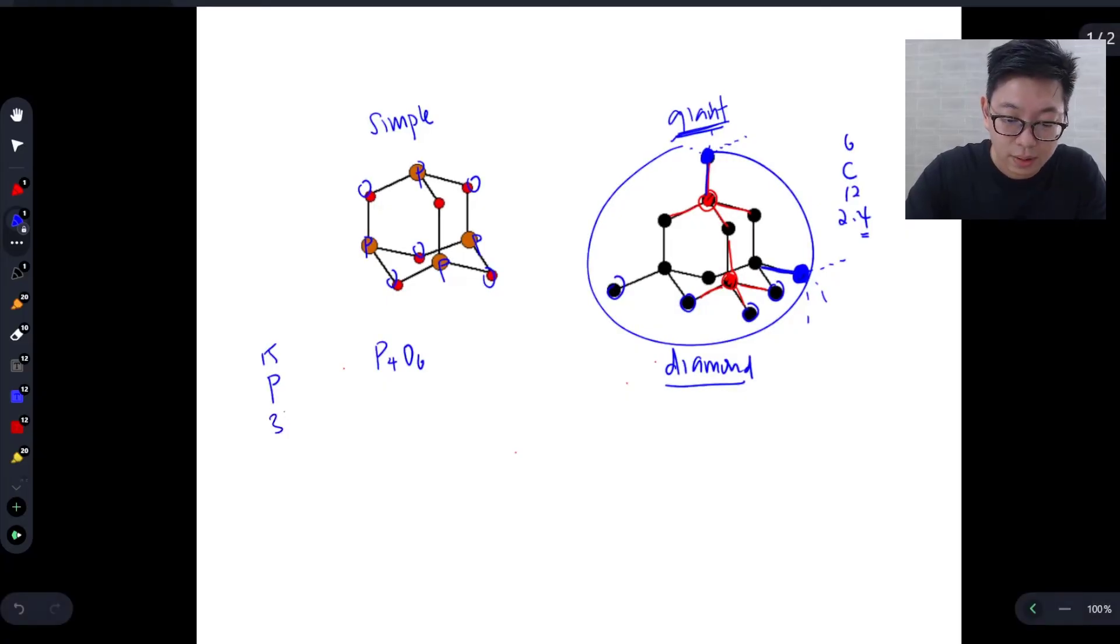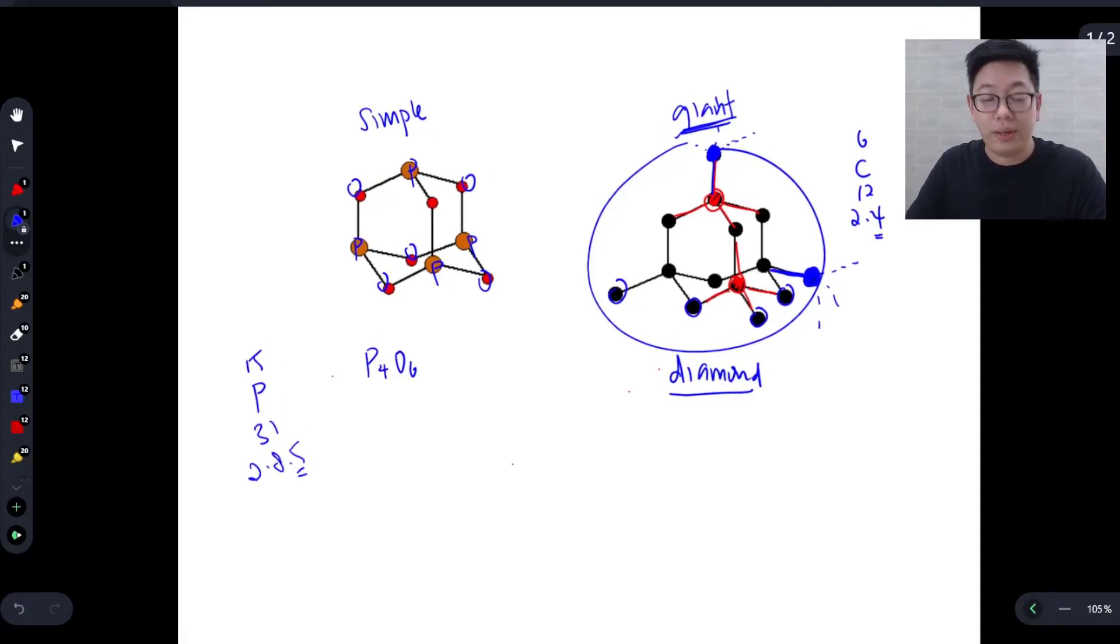So phosphorus is 15 31. And that means that the electronic configuration is 2.8.5, alright? Okay, so what that also means is that phosphorus will only need to gain three electrons to become stable. And it needs to form three bonds. So once again, with five valence electrons, it needs to gain three electrons, it will form three bonds.